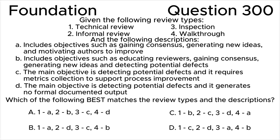Which of the following best matches the review types and the descriptions? A: one is A, two is B, three is C, four is D. B: one is A, two is D, three is C, four is B. C: one is B, two is C, three is D, four is A. D: one is C, two is D, three is A, four is B.